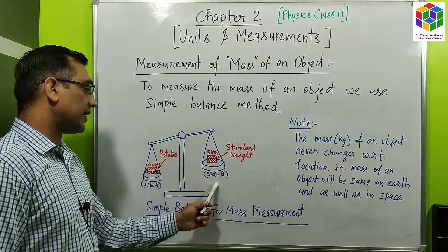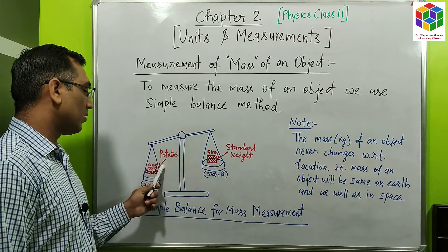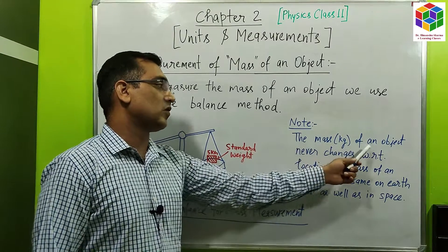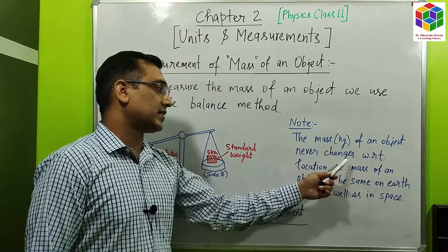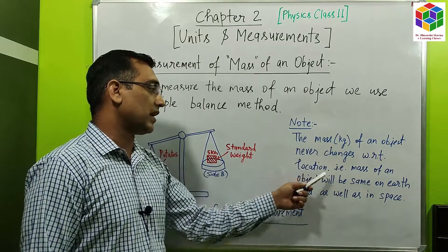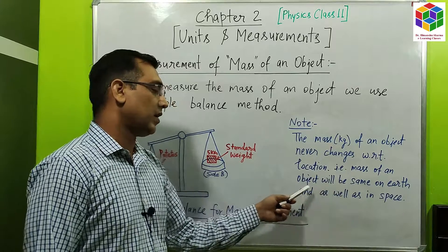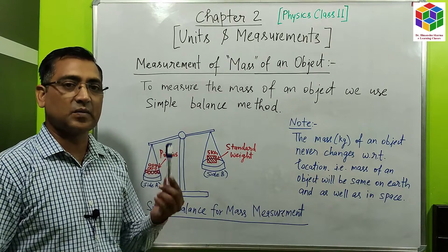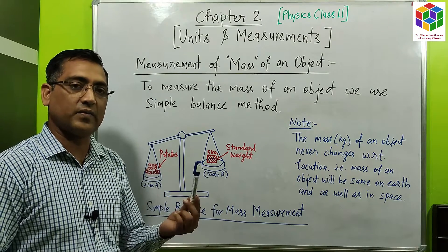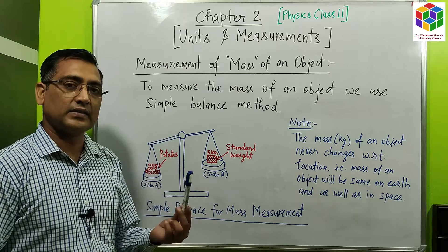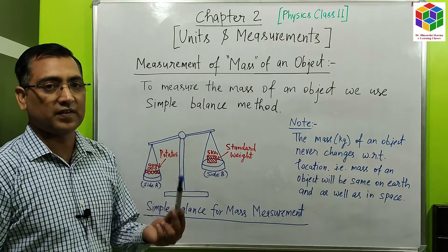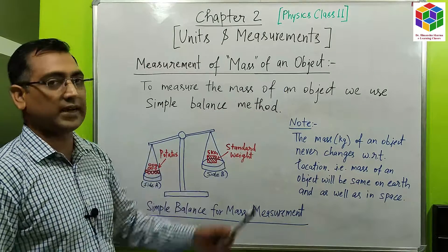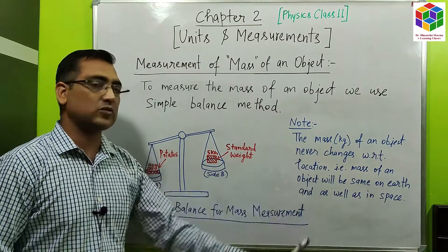When side A is equal to side B, then we say that the potatoes are of 5 kg mass. A very important note: the mass of an object never changes with respect to location. This means the mass of an object will be the same on earth as well as in space. For example, if the mass of a marker is 50 g on earth, then the mass of this marker will also be 50 g on the moon.